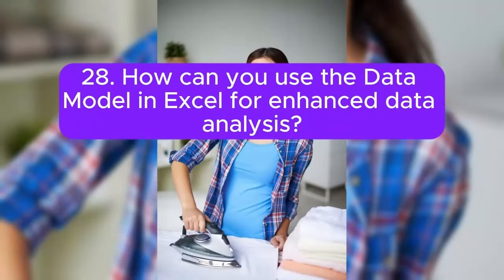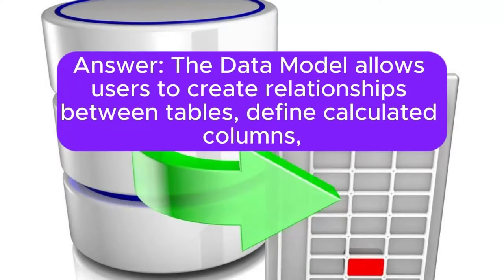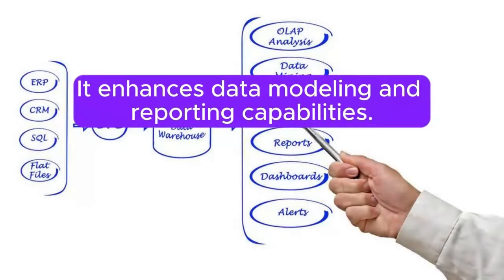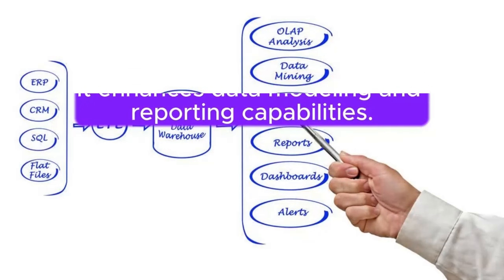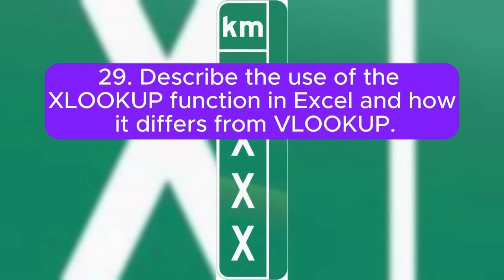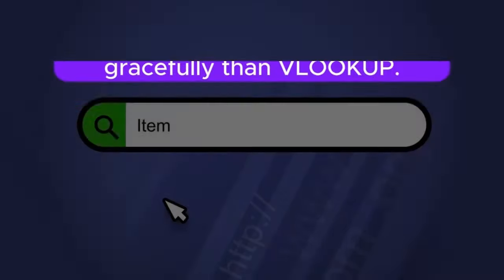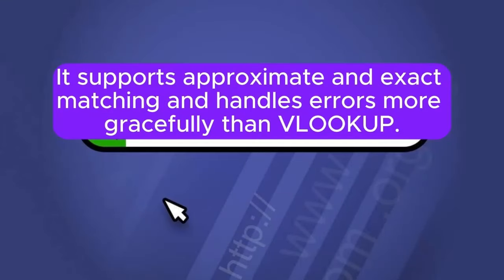Question 28: How can you use the data model in Excel for enhanced data analysis? The data model allows users to create relationships between tables, define calculated columns, and perform advanced analysis with features like Power Pivot. Question 29: Describe the use of the XLOOKUP function in Excel and how it differs from VLOOKUP. XLOOKUP is a versatile lookup function that can search in both vertical and horizontal directions. It supports approximate and exact matching and handles errors more gracefully than VLOOKUP.